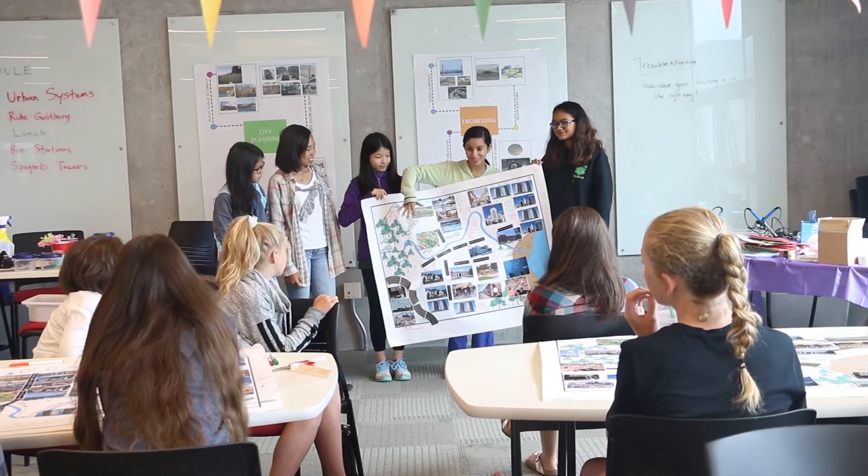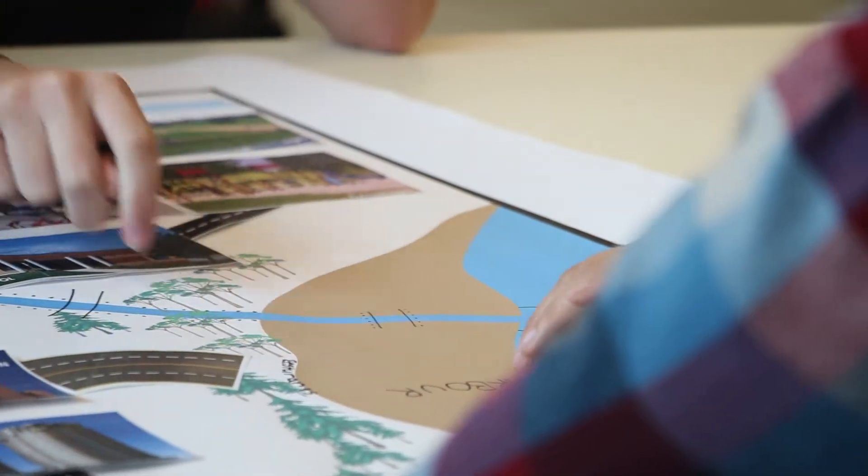Our summer program for high school students is the ASAP program, which stands for Applied Sciences Advancement Program. The goal is to get high school students engaged in sciences and engineering here at UBC. We want to show them what it's like to learn at university.